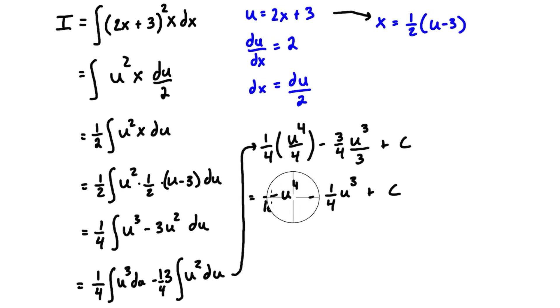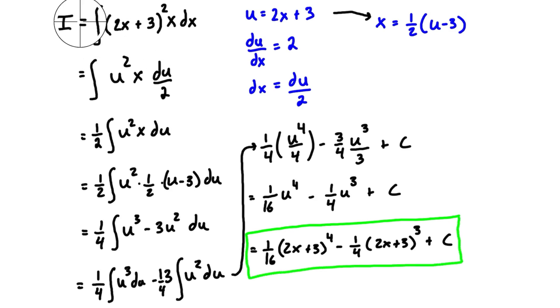All we need to do now is resubstitute back in what we have for u. U is just equal to 2x + 3, so we're going to have 1/16 times (2x + 3)⁴ minus ¼ times (2x + 3)³ plus our arbitrary constant. That is our final answer to the original problem.